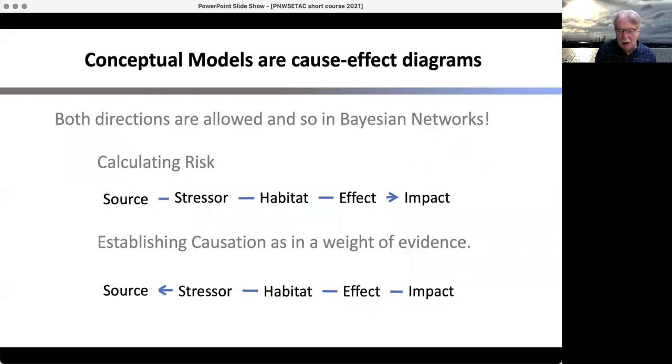In a conceptual model or directed acyclic graph, you can calculate risk if you go from this direction. But every equation can be turned around. You can see an impact and then start looking at what the potential inputs would be, the sources where it came from, the stressors responsible for it that actually cause that particular impact. You can do this with Bayesian networks as well. You can calculate them forward to estimate risk, and then actually ask it to go backwards. And it will give you the most likely probabilities for giving that particular answer.